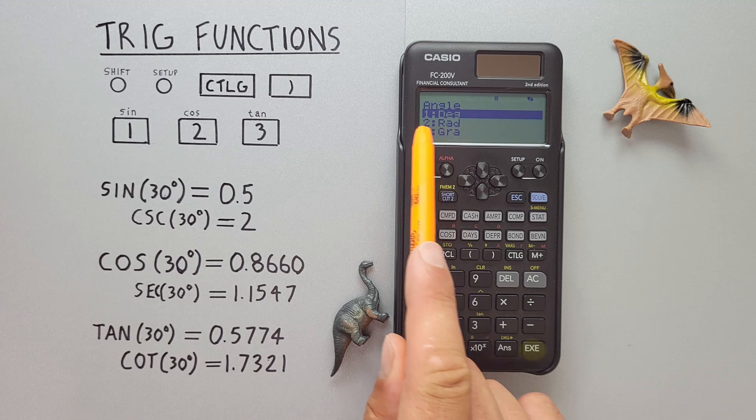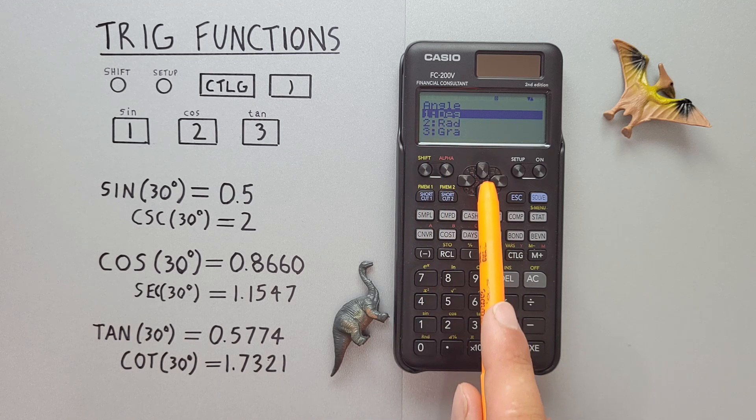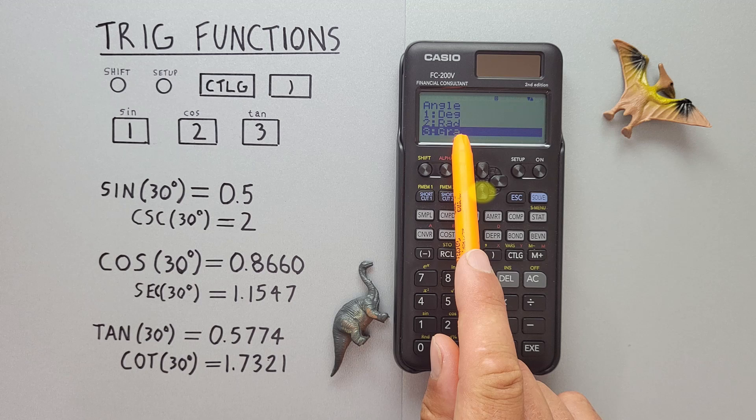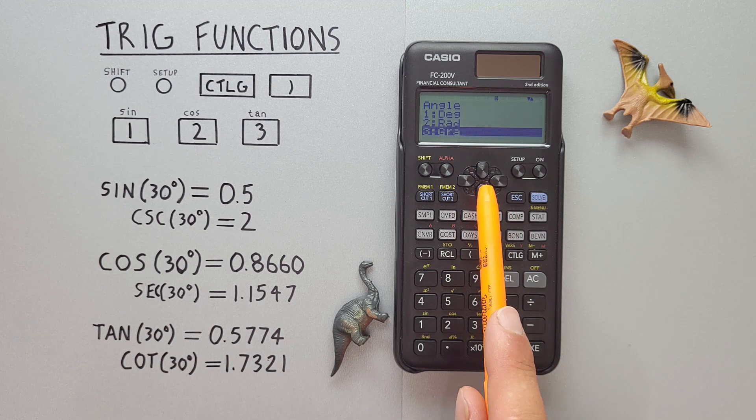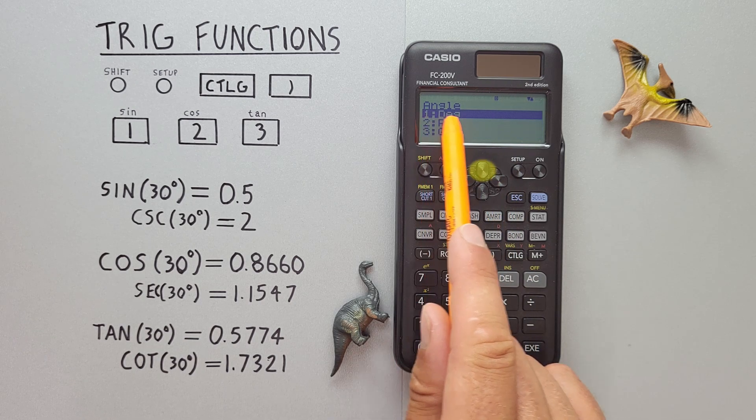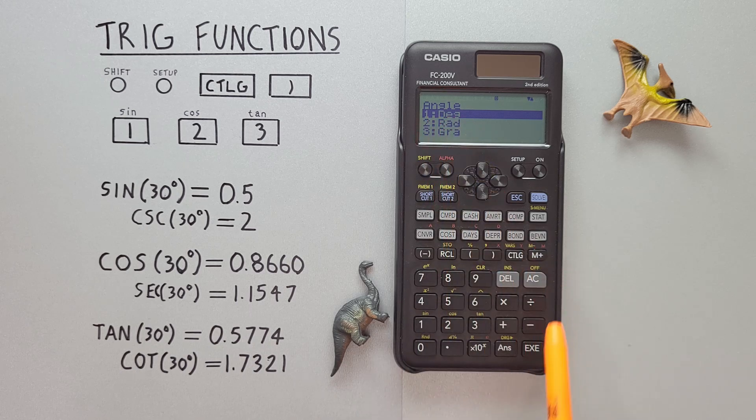And we see we can choose between degrees, radians, or gradients. Like I said, we'll be using degrees. So highlight degrees, number one, and select that.